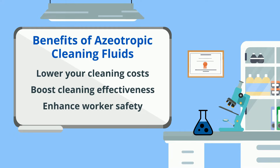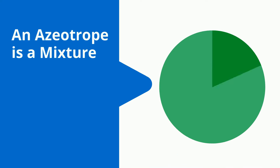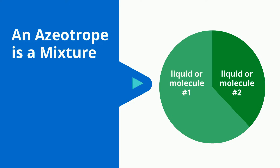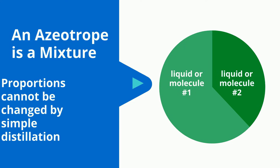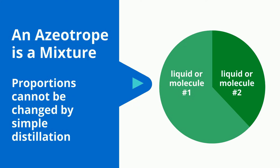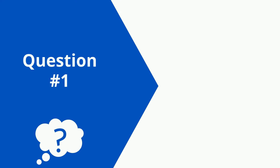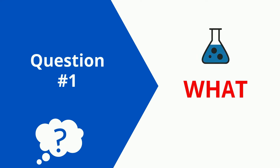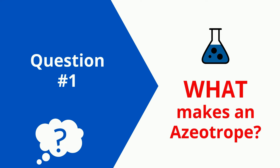In simplest terms, an azeotrope is defined as a mixture of at least two different liquids or molecules whose proportions cannot be changed by simple distillation. So the first question is: what makes an azeotrope?